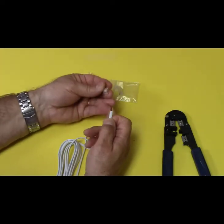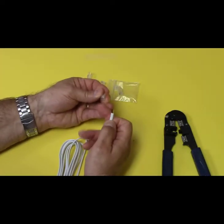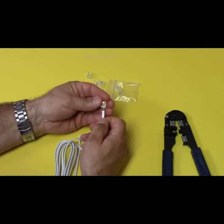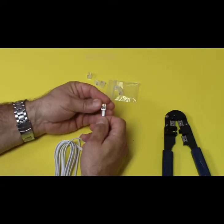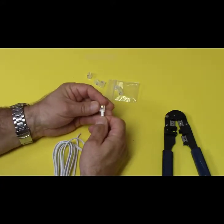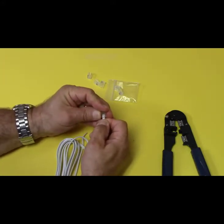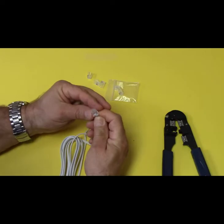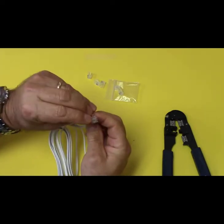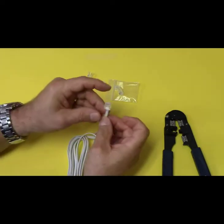So remember, I said we have to have the tab down. So the tab is down. We're going to slide the cable right in here like this, and we're going to push it until it feels like it's all the way up at the end. Wiggle it a little bit. And if you look very closely, you can see those wires right up at the end of the connector.